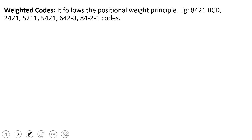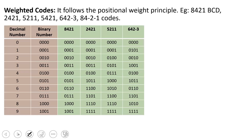I will explain these codes. In this table, we have a decimal number equal to its binary number representation. Then the code is assigned equal to the binary number, which equals the decimal. We will write the codes in a table, starting with 8421.